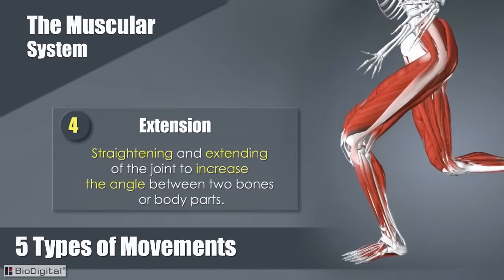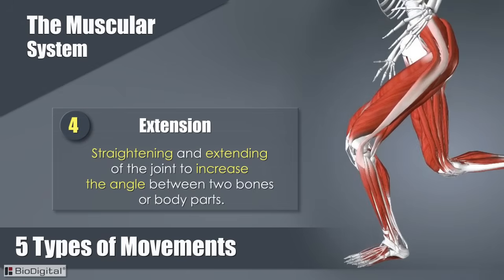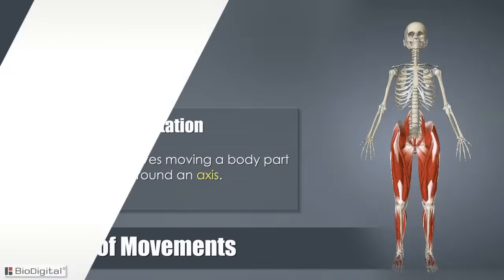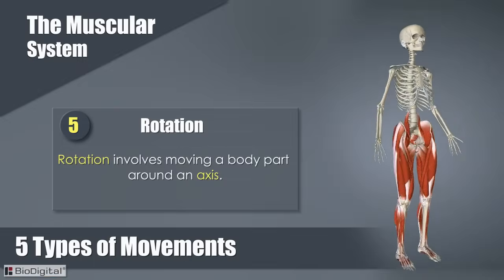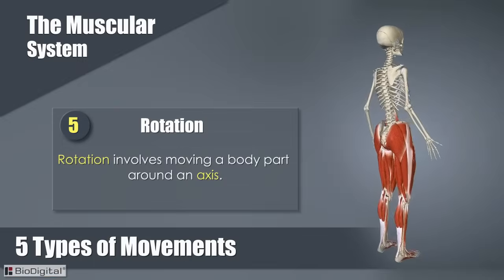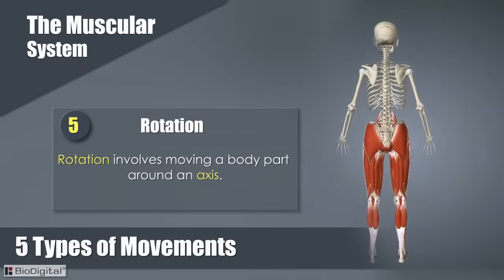Extension is the straightening and extending of a joint to increase the angle between two bones or body parts. Lastly, rotation involves moving a body part around an axis.